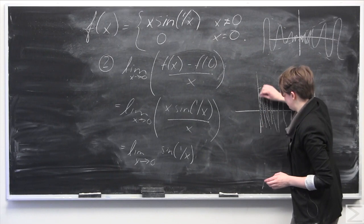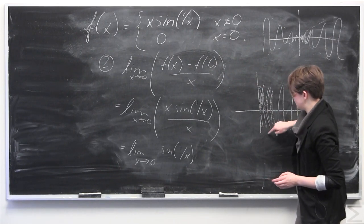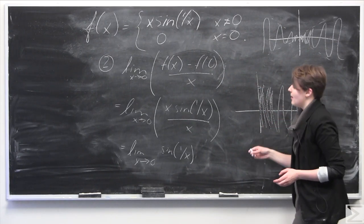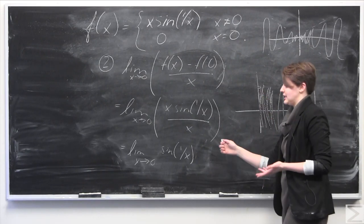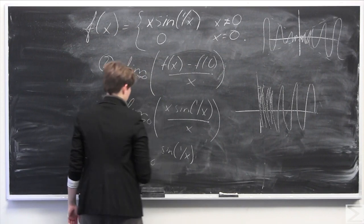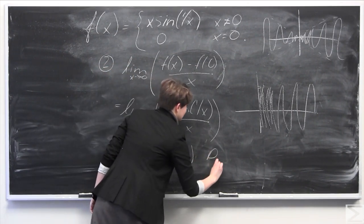So in fact, it oscillates between these upper and lower bounds, but it in fact has no limit, as it does not end up at one point or another as x approaches 0. So in fact, this limit does not exist.